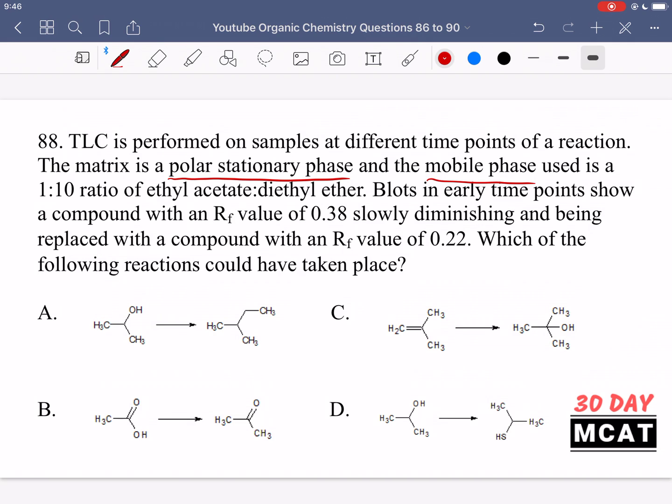So we had something at one time point which had a 0.38 RF and then later became 0.22. So that means RF is going down over time, which means that the compound we're looking at is becoming more polar over time. And we're asked which reaction took place? Well, the only reaction that could have taken place is one which turned a less polar compound into a more polar one.